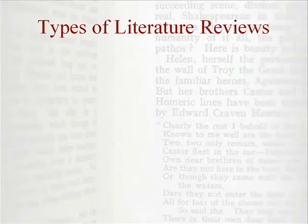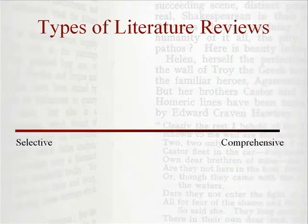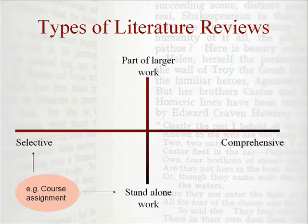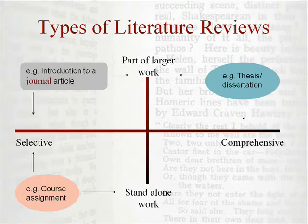So what does a literature review look like? There are different types of literature reviews you may encounter or be required to write while in graduate school. Literature reviews can range from being selective to comprehensive, and can be part of a larger work or stand alone. A course assignment is an example of a selective review — it focuses on a small segment of the literature on a topic and makes up the entire work. The literature review in a thesis or dissertation is an example of a comprehensive review that is part of a larger work. Most research articles begin with a selective literature review to establish context, often as part of the introduction.